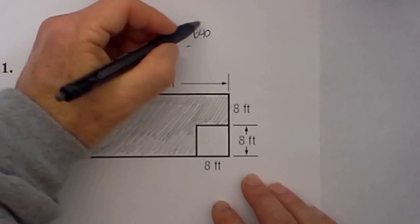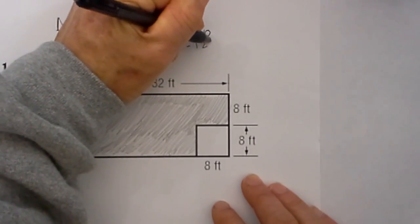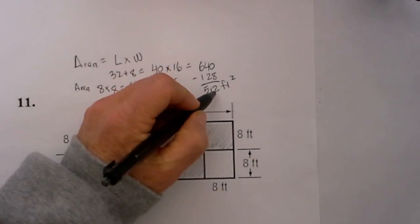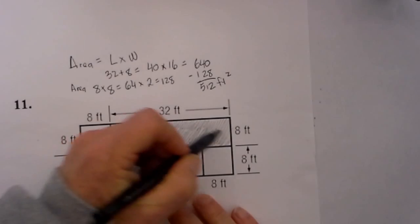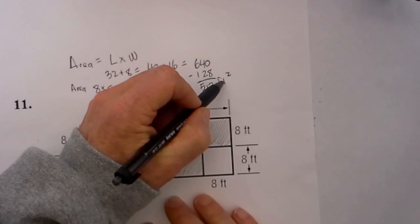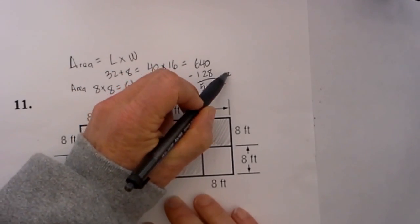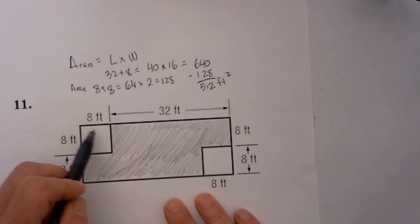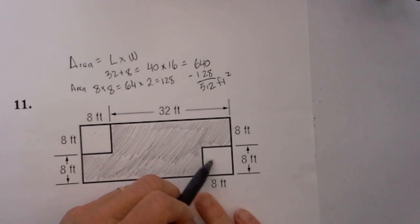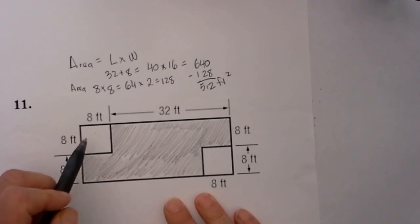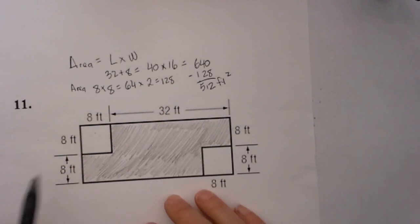Now for the shaded area, we take 640 minus 128, and that is going to equal 512. So the answer is 512, and since this is a measurement we need to make sure we get our unit of measure, and that it is in feet and the area is squared, so it would be 512 feet squared. So in summary, with this composite figure, the shaded area I had a rectangle but I had these two boxes or two squares that I needed to subtract, so I found the total area and then subtracted the area of these two boxes and came up with 512 feet squared.